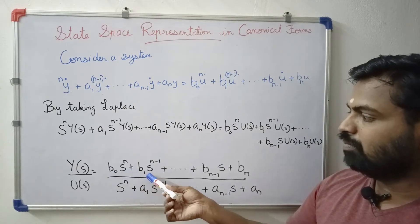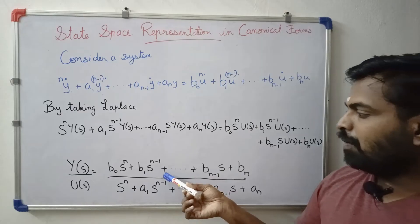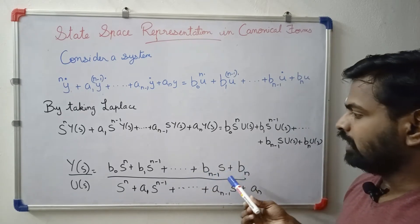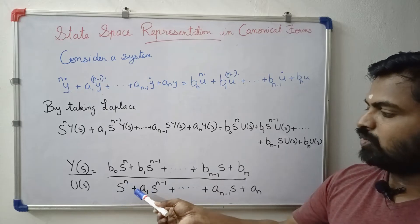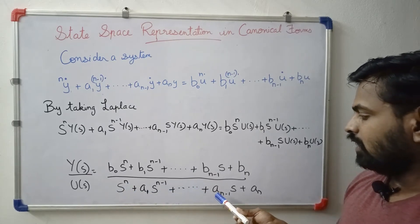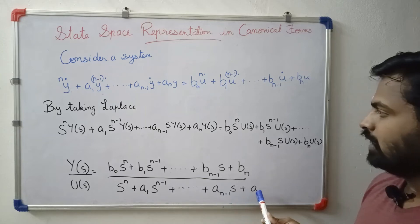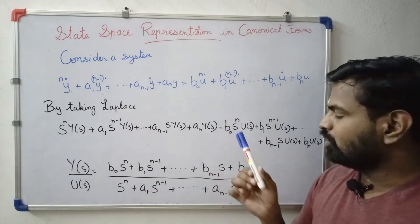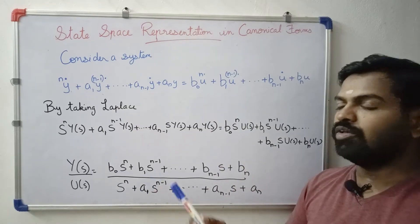b0 s raise to n plus b1 s raise to n-1 plus etc. plus b(n-1) s plus bn, divided by s raise to n plus a1 s raise to n-1 plus etc. a(n-1) s plus an. That is the transfer function Y(s) by U(s).